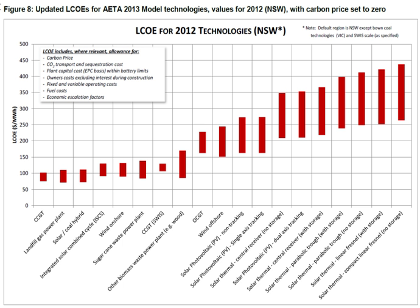It is a first-order economic assessment of the cost competitiveness of an electricity generating system that incorporates all costs over its lifetime: initial investment, operations and maintenance, cost of fuel, and cost of capital. The levelized cost is that value for which an equal valued fixed revenue delivered over the life of the asset's generating profile would cause the project to break even.